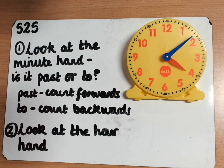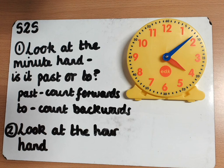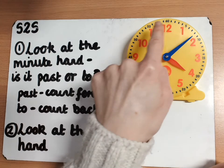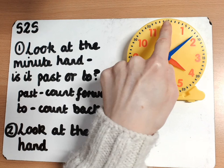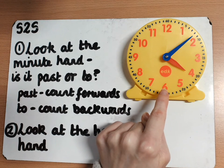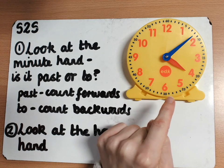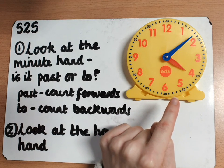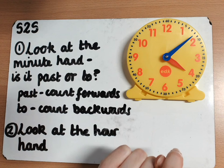Let's look at some examples on our clock face. Reading my steps to success: step one tells me to look at the minute hand — is it past or to? Well, if the clock hand is between the 12 and the 6 this way, I know that it is past. So it's past, and I'm going to be counting forwards.